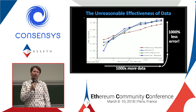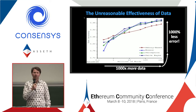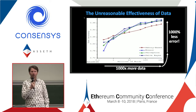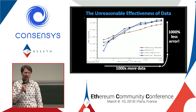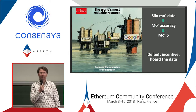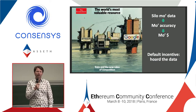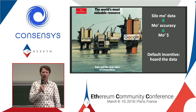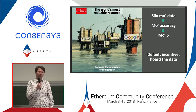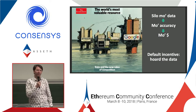Google picked up on this in the mid-2000s. They wrote a paper called The Unreasonable Effectiveness of Data, and their modus operandi became: go around and gather as much data as you can. They bought satellite companies, mapping companies — to gather more data. They call themselves an AI company, but that's a head fake. They are a data company through and through. If you have more data, you have better accuracy, and with that you can sell more ads — higher click-through rate. You get this data network effect: more data, more accuracy, more money. So there's a default incentive to hoard the data — you don't want to share because then other models get accurate too.